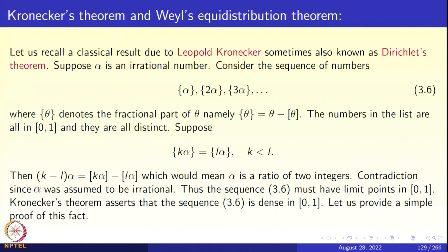These numbers listed in 3.6 are all in the compact interval [0,1] and they are distinct. Suppose they were not distinct — suppose there is a pair k and l, distinct positive natural numbers, such that the fractional part of k alpha equals the fractional part of l alpha. That means k alpha minus its integer part equals l alpha minus its integer part, so (k minus l) times alpha is an integer, meaning alpha is rational — a contradiction, since alpha is irrational.